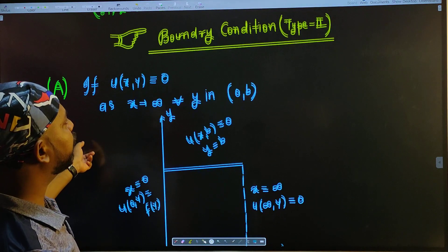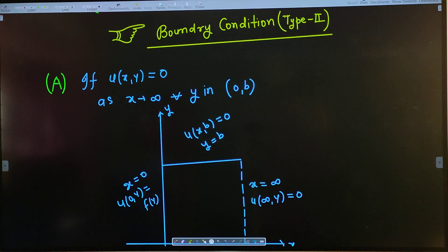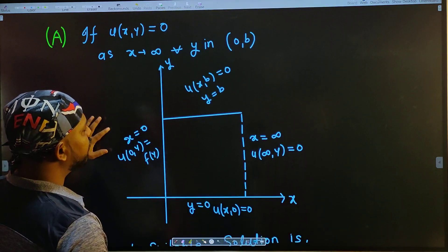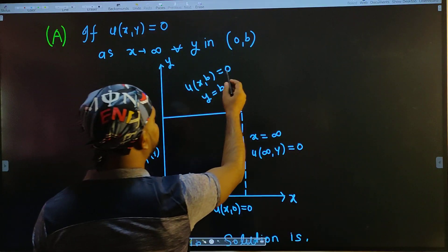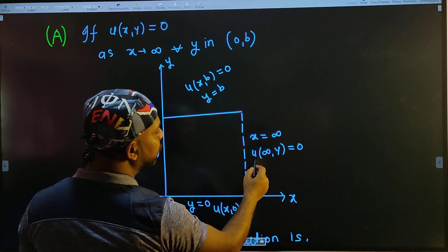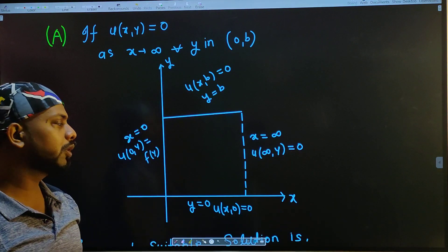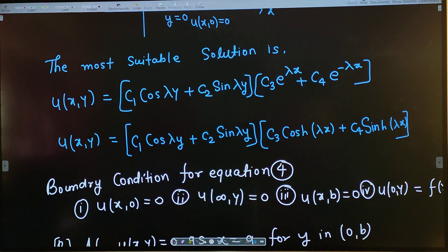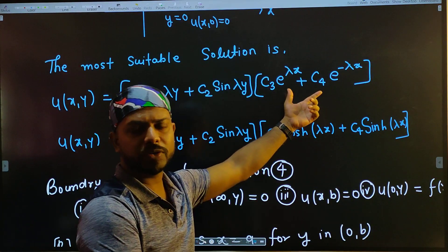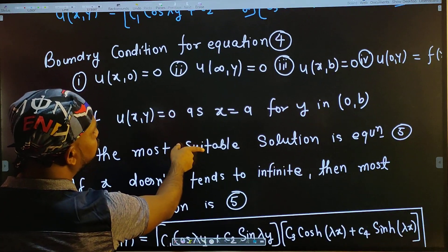Boundary condition Type 2: if u(x, y) = 0 as x tends to infinity, for y in (0, b). The diagram shows: at x = 0, u(0, y) = f(y); u(x, b) = 0 at y = b; u(x, ∞) = 0 as x → ∞; u(x, 0) = 0. The most suitable solution is: u(x, y) = (c₁ cos λy + c₂ sin λy)(c₃ e^(λx) + c₄ e^(-λx)), or equivalently using hyperbolic: c₃ cosh λx + c₄ sinh λx. You can keep exponential or hyperbolic since you know how to convert.